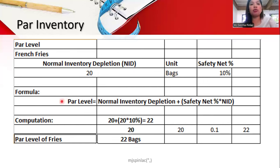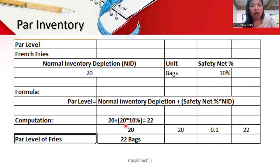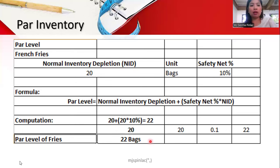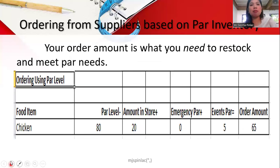The par level formula is: par level = normal inventory depletion + (10% × normal inventory depletion). With a normal inventory depletion of 20 bags, 10% of 20 is 2. So 20 plus 2 equals 22 bags. The par level of fries should be 22 bags because we added the 10% safety net to the normal inventory depletion.